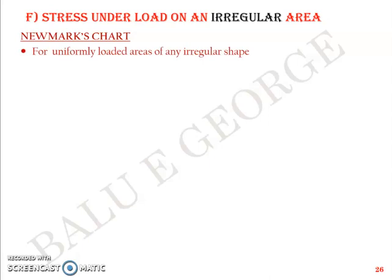Now one thing that's pending is stress under load on an irregular area. Every structure you see around may not be of a proper shape—it may not be a proper circle, line load, or rectangle. Usually, loads coming over the soil tend to have an irregular shape. In such cases, we use what is called Newmark's chart, which is for uniformly loaded areas of any irregular shape.